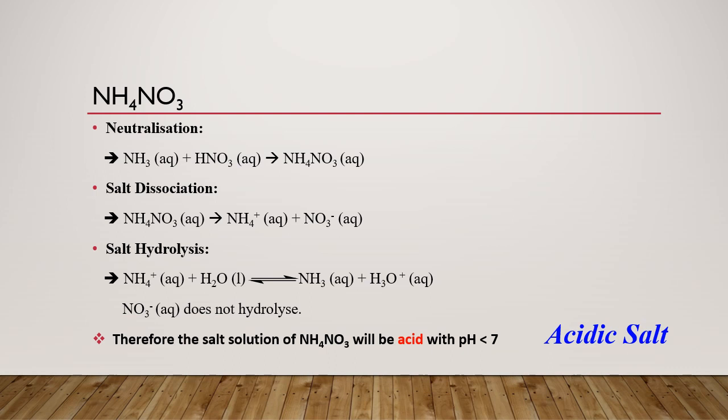Ammonium nitrate. Ammonia is a weak base and then nitric acid is a strong acid, so it produces ammonium nitrate. Strong acid will produce a weak conjugate base and weak base will produce strong conjugate acid. So this strong conjugate acid can hydrolyze in water. So the salt hydrolysis will produce ammonia and H3O plus, hydrogen ion. So this one showing that this is acidic salt with pH less than 7. So can you get the idea how to identify the basic salt, acidic salt, or neutral salt?